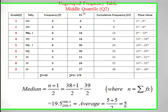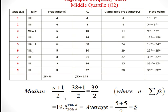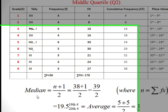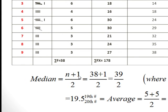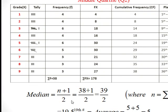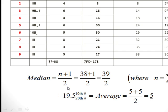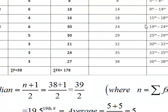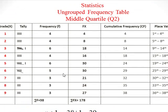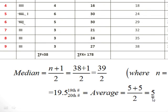Q2 is the middle quartile, which is also known as the median. Since it is the half, the formula is ½(n + 1). With n = 38: 38 + 1 = 39 ÷ 2 = 19.5, giving us the 19th and 20th numbers, both of which are 5. So the average of 5 and 5 is 5. Q2 = 5, which matches our earlier median result.